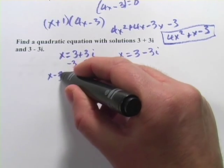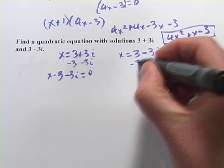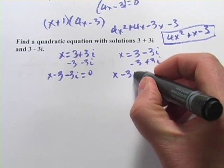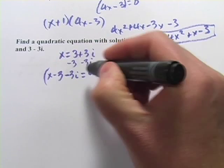And then we'll set these to 0 by subtracting. So this one, I'm going to subtract 3 and subtract 3i. So I get x minus 3 minus 3i equals 0. And over here, I get, I have to subtract 3, but add 3i. So we'll get x minus 3 plus 3i equals 0. Now those are my factors.